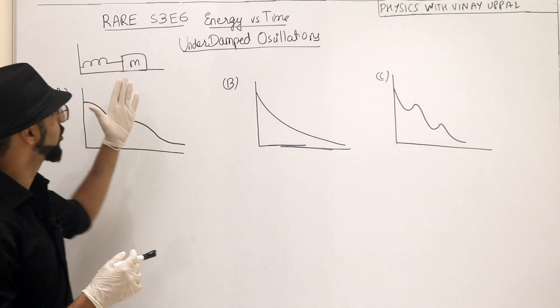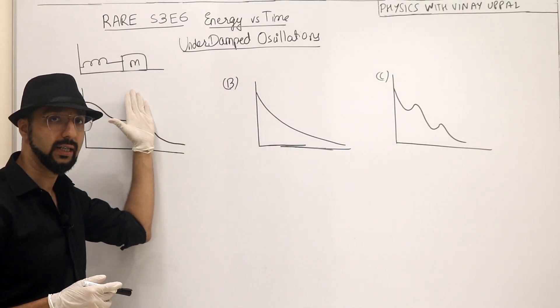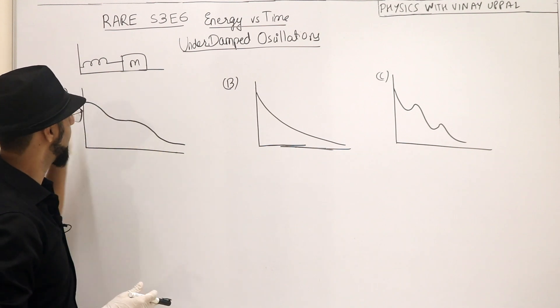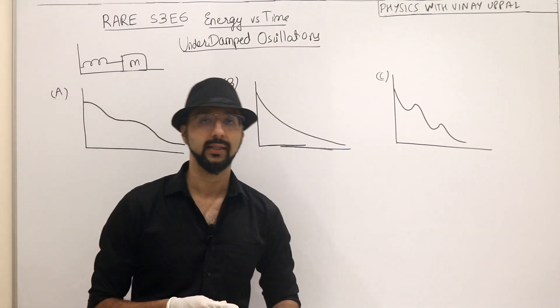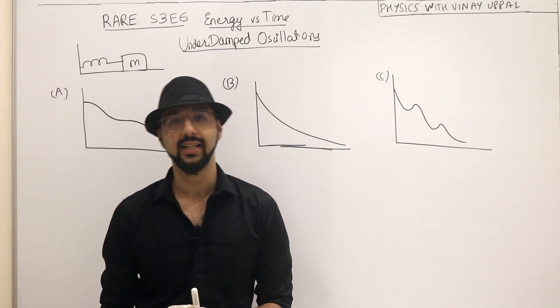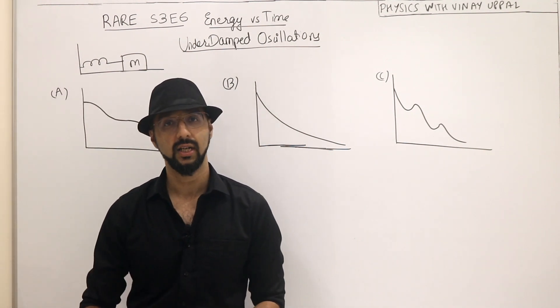How will the energy, mechanical energy of the system vary with time? I ask a basic question, energy versus time graph. I gave three options and it was very disappointing to see that almost 90% got it wrong.